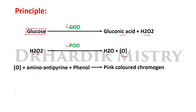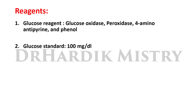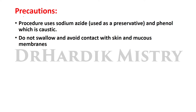The nascent oxygen is accepted by amino antipyrin — an oxygen acceptor — which combines with phenol to give a pink color chromogen. For reagents, we use glucose reagent containing glucose oxidase, peroxidase, 4-amino antipyrin, and phenol, plus a glucose standard of 100 mg/dL. Precautions: the procedure uses sodium azide as a preservative and phenol which is caustic — do not swallow and avoid contact with skin and mucous membranes.